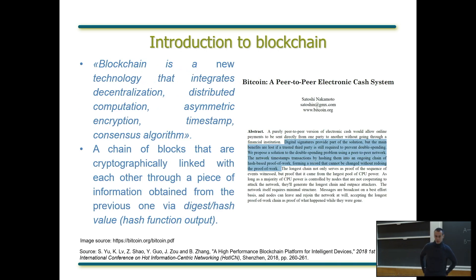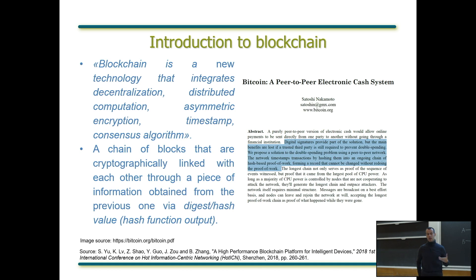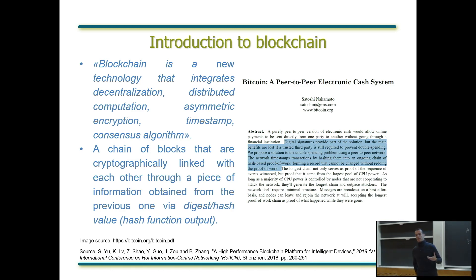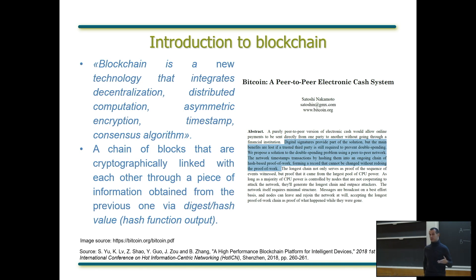There are many ways blockchain has been defined. The one I find most appealing describes it as a new technology — newer as of 2018 when the reference was first published — that integrates decentralization, distributed computation, asymmetric encryption, timestamps, and consensus algorithms. The first time I saw this definition I thought it was just meaningless jargon, but in fact it is a quite good definition because all the aspects mentioned are indeed true.